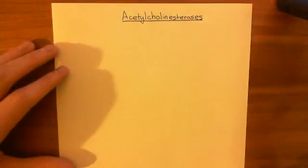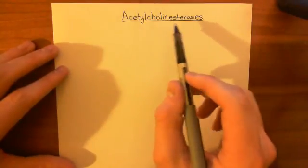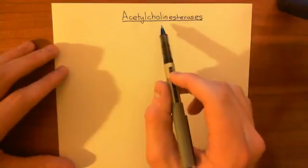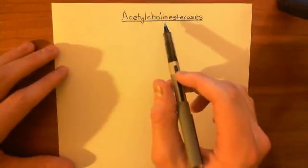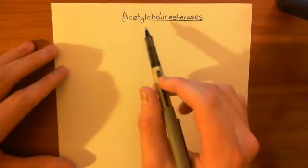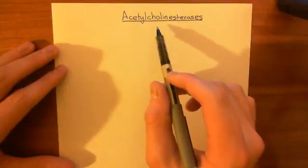And you might wonder, well, what's the myasthenia gravis doing there? Well, basically, acetylcholinesterase inhibitors, most of them are used to treat myasthenia gravis or diagnose myasthenia gravis. The other major use for inhibitors of the acetylcholinesterase enzyme is in treating Alzheimer's disease.